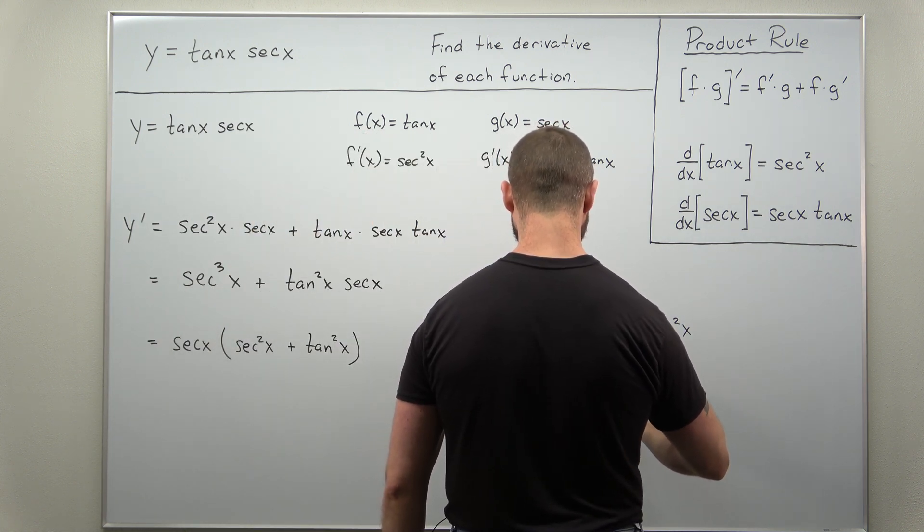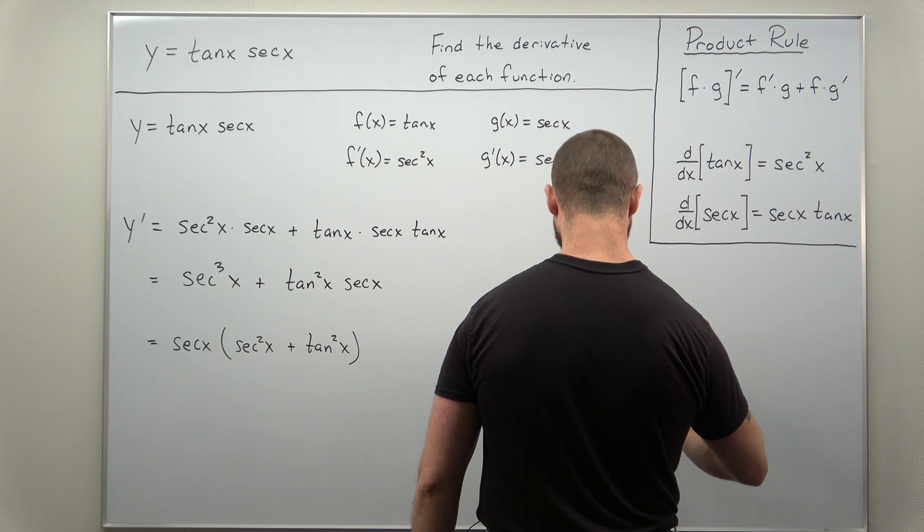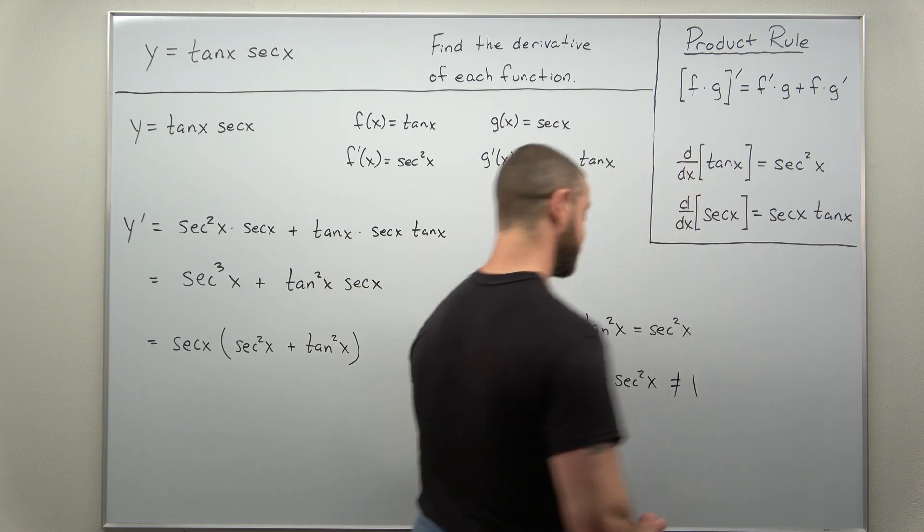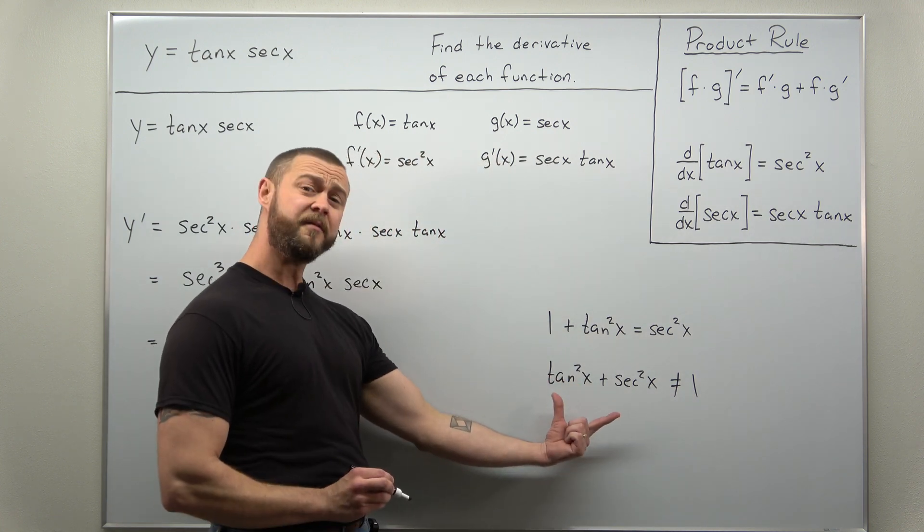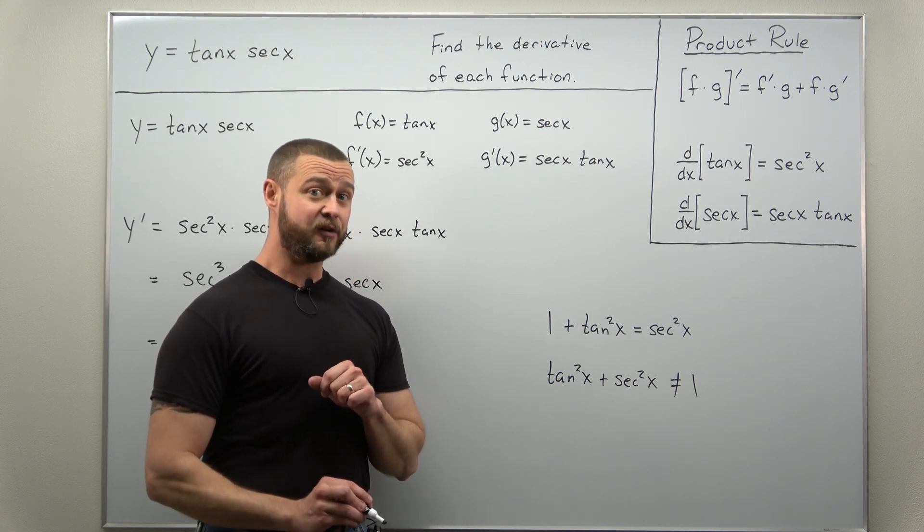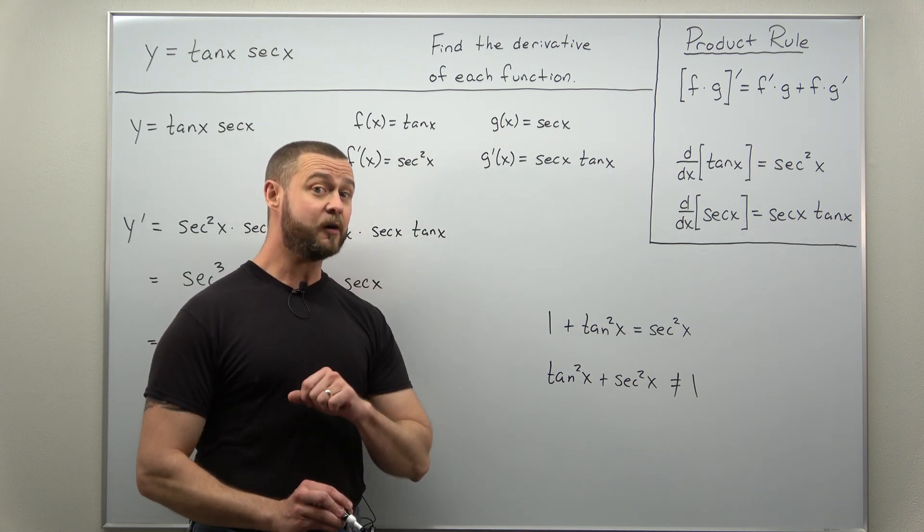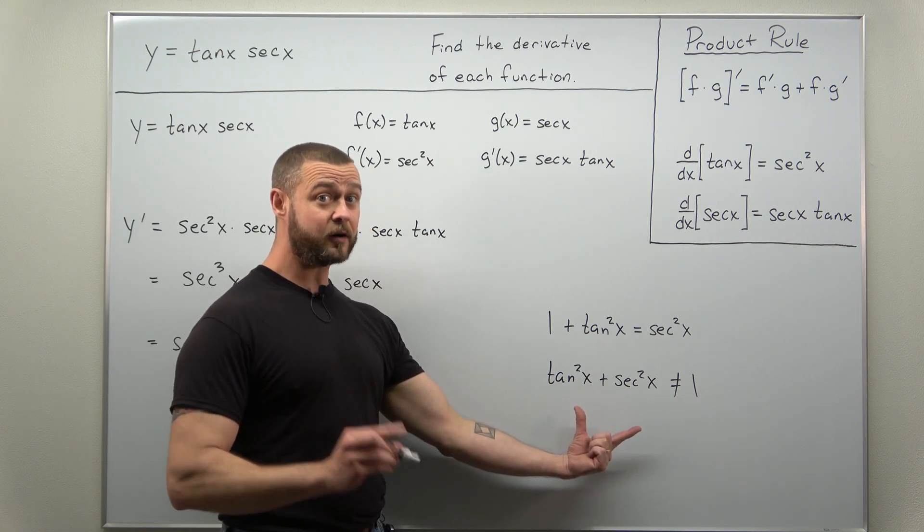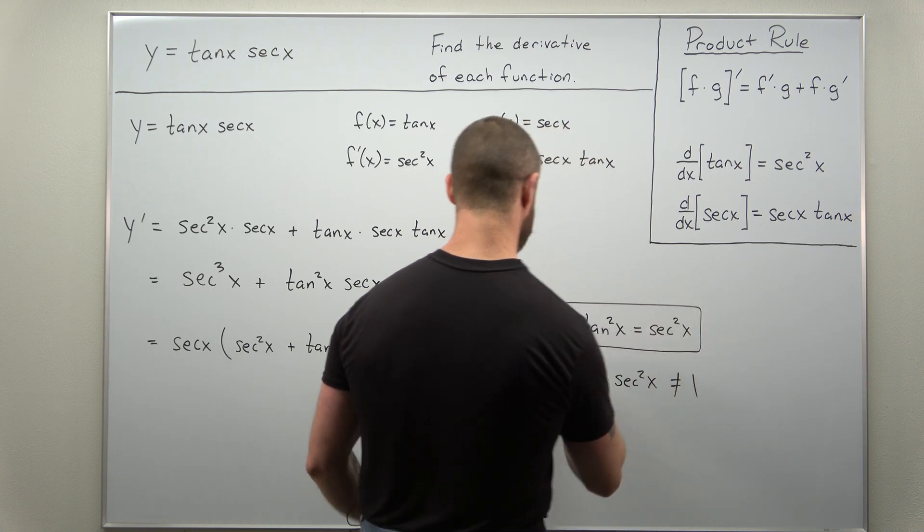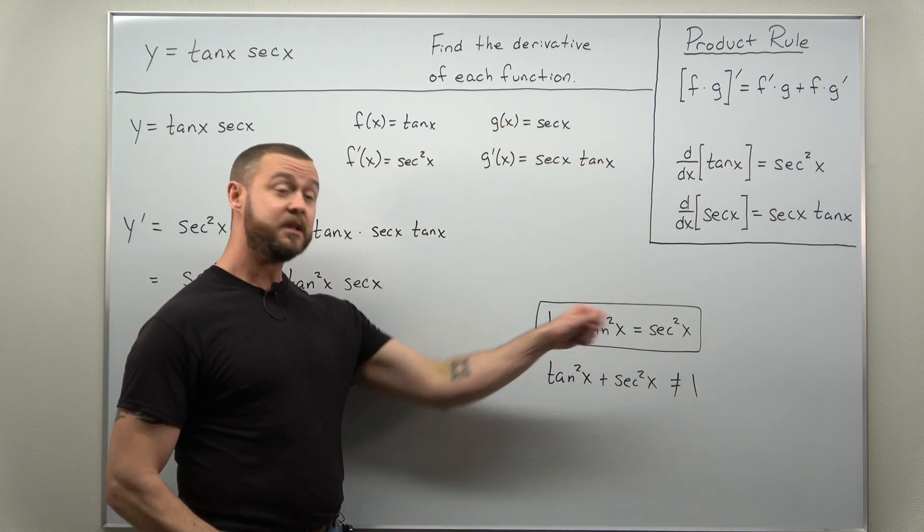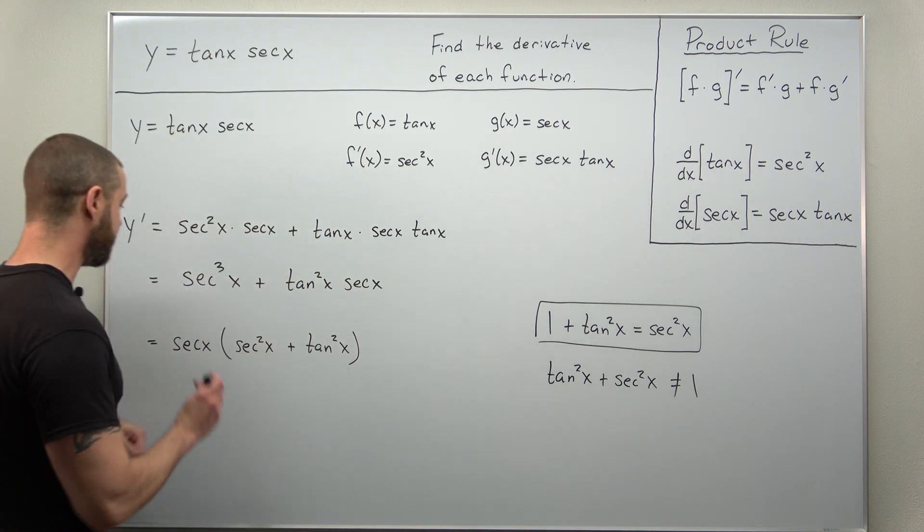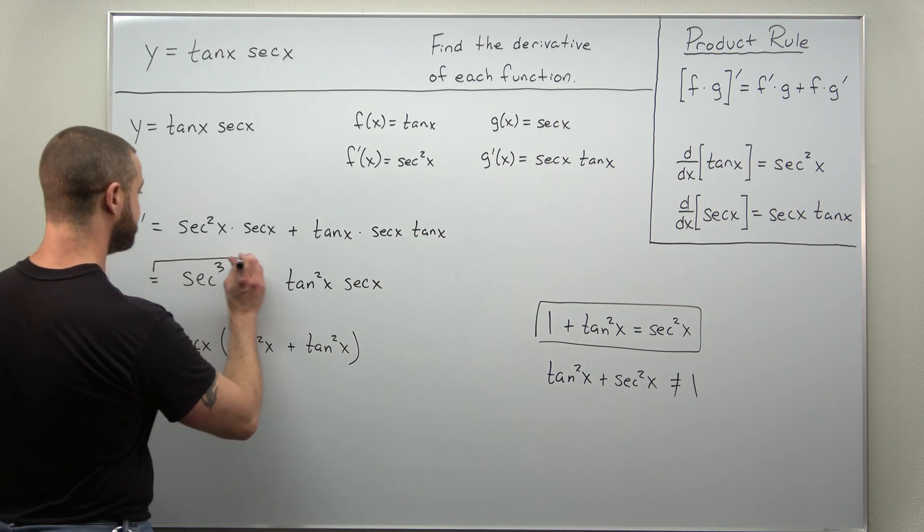And if you notice here, that's not what we have here - just be careful. A very common misconception or mistake is thinking that the identity for tangent and secant works like the basic Pythagorean identity for sine and cosine: sine squared plus cosine squared equals one. But not tangent squared plus secant squared - the correct version is that one plus tangent squared equals secant squared.